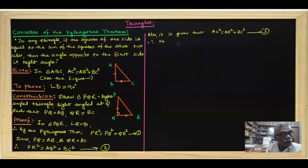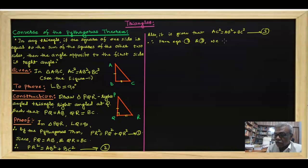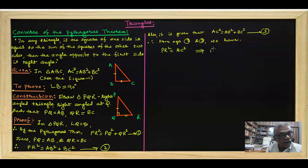Therefore, from equations two and three, we have PR squared equal to AC squared, and hence this implies PR equals AC.